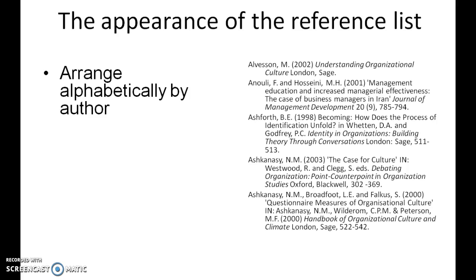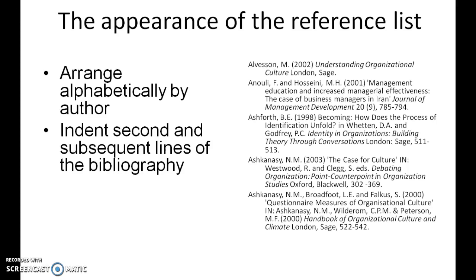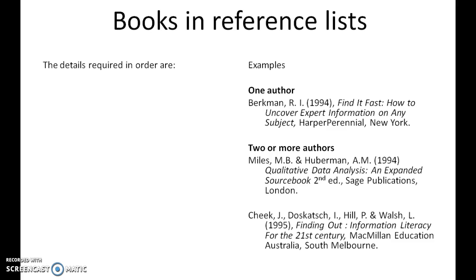You wouldn't believe how many times I've seen reference lists arranged non-alphabetically, or with information other than the author coming first. It's a really easy way of showing that somebody has been sloppy and careless. There's an example in the document. You should also indent the second and subsequent lines of the bibliography — the document gives a better sense of how this should be laid out.